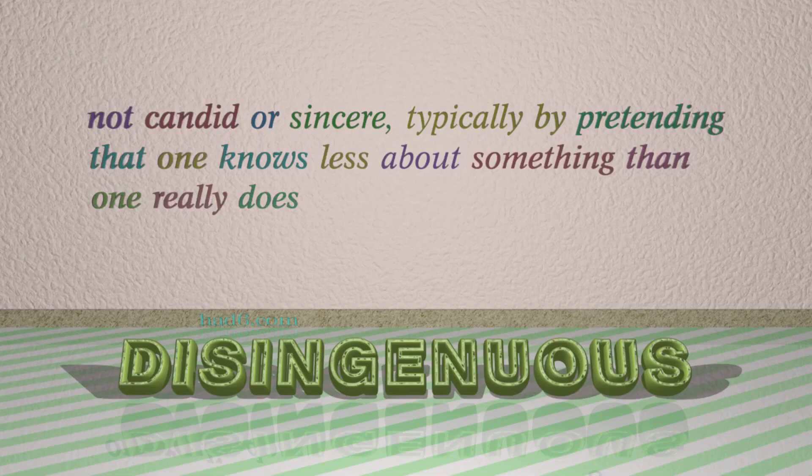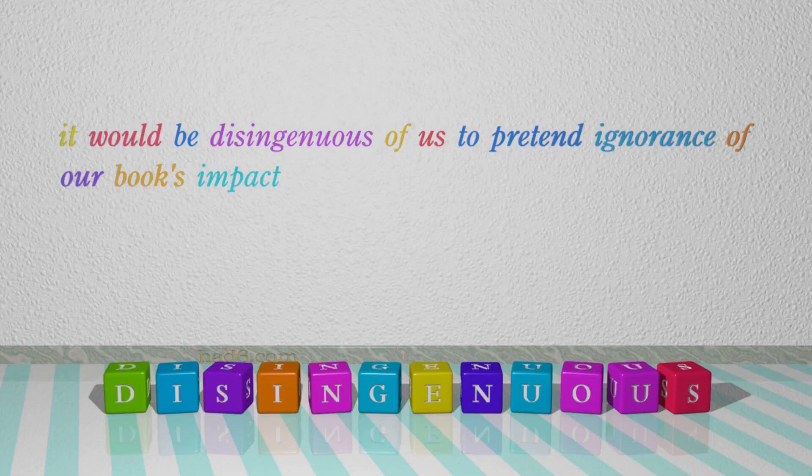Number 7: Disingenuous. Which means not candid or sincere, typically by pretending that one knows less about something than one really does. For example: It would be disingenuous of us to pretend ignorance of our book's impact.